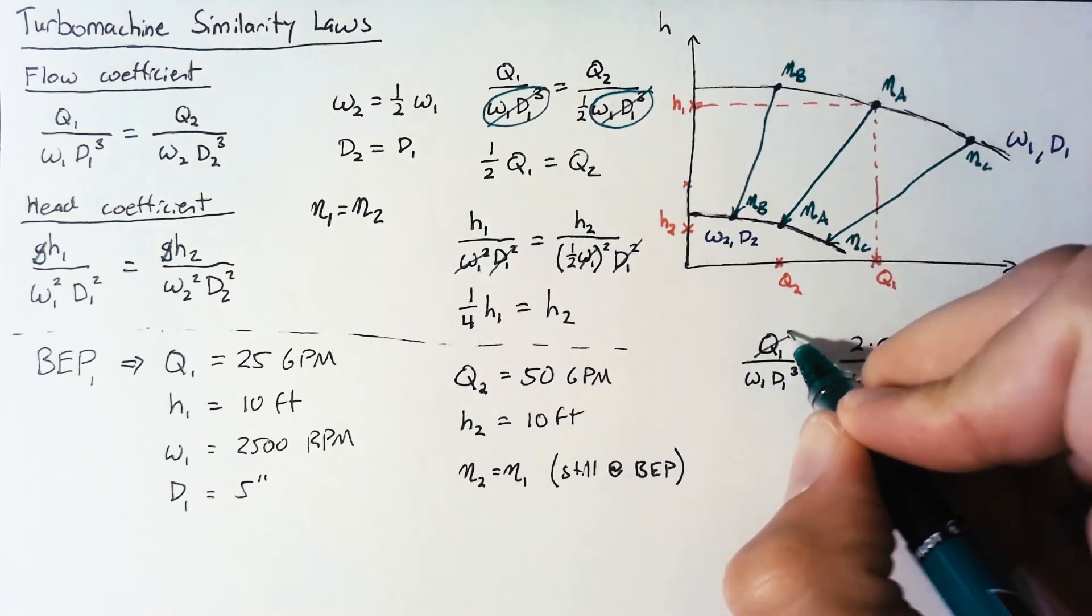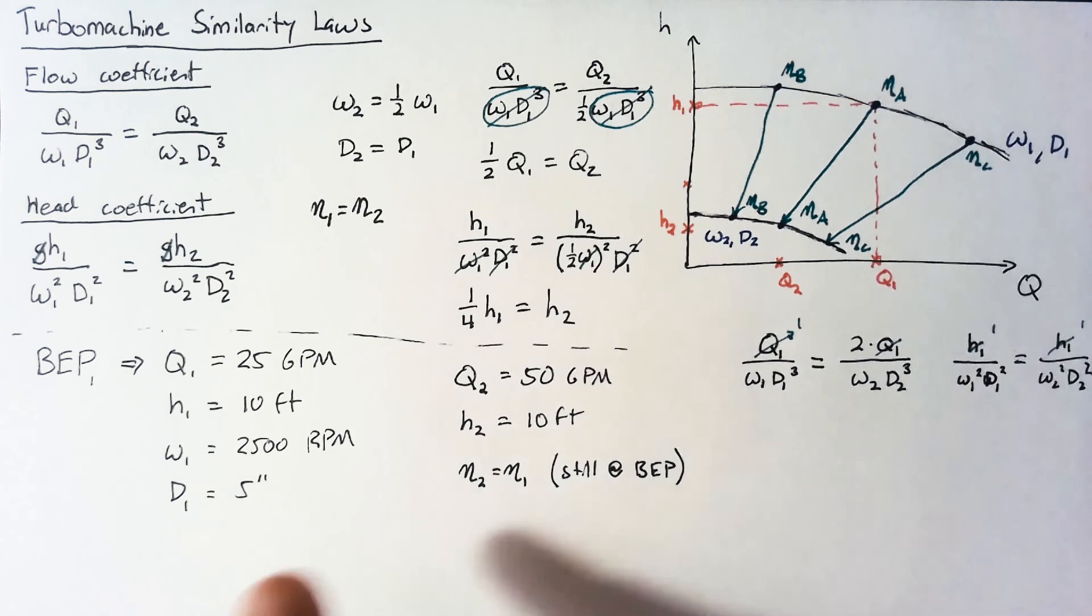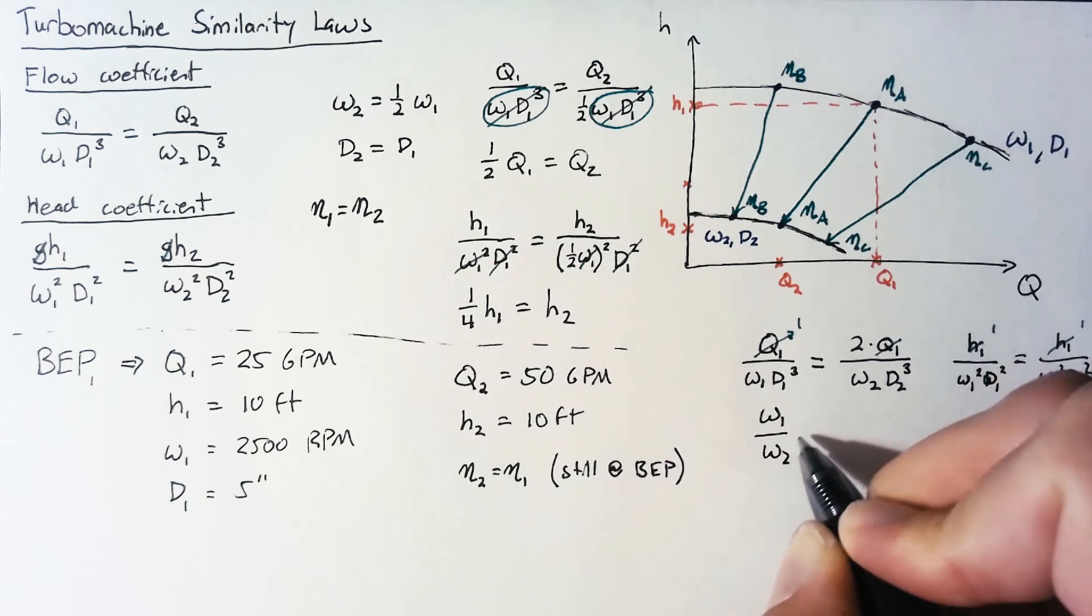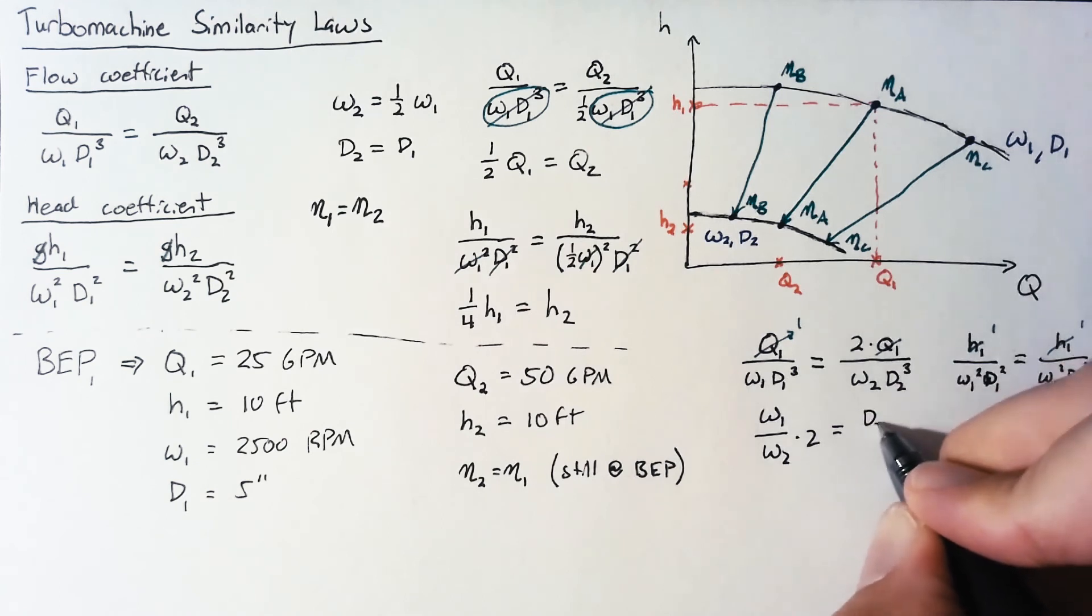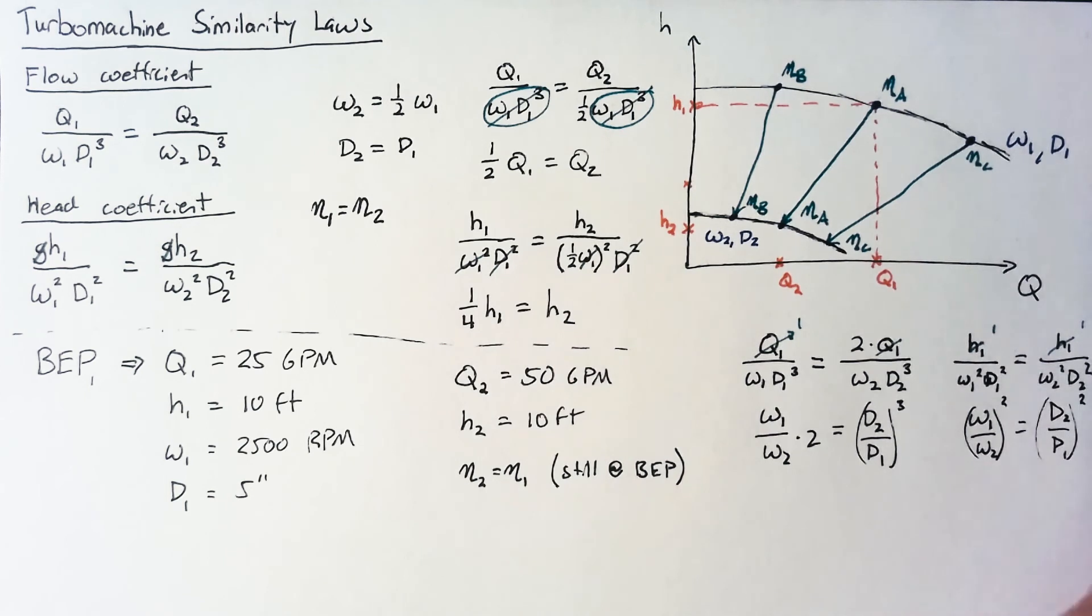We can cancel out this Q1 and we can cancel out the h1 and then what we're going to do is just try and solve each of these for the ratio. We could plug in all these values but our units are going to be really weird and it's going to be a lot easier for us if we leave them in terms of ratios. By moving this omega 1 to the right hand side we can say that omega 1 over omega 2 multiplied by that 2 is going to be equal to D2 over D1 cubed. Doing the same thing for head, isolating these ratios we end up with omega 1 over omega 2 squared is equal to D2 over D1 squared. And of course we can just take the square root of both sides and get rid of those squared terms.